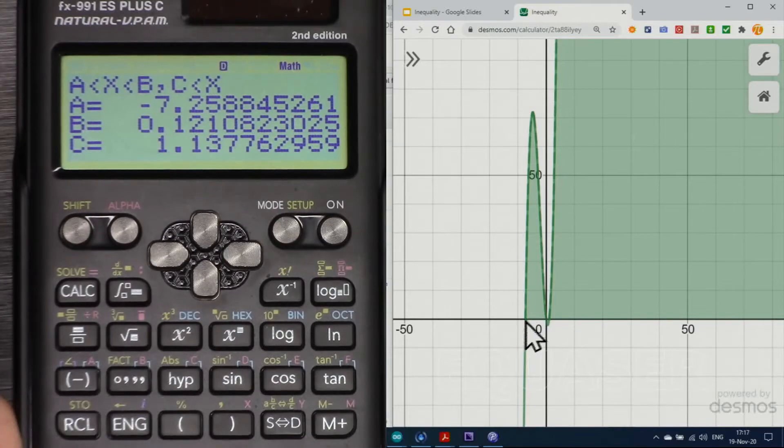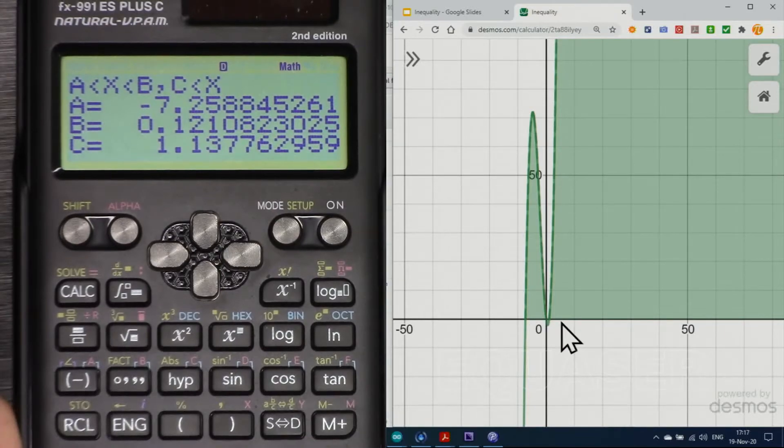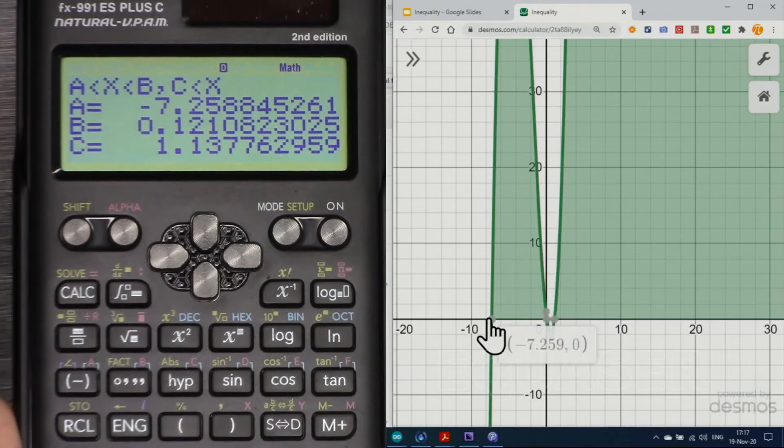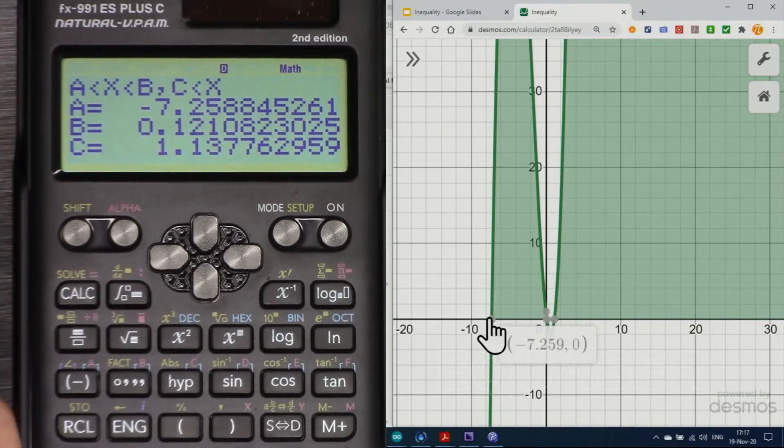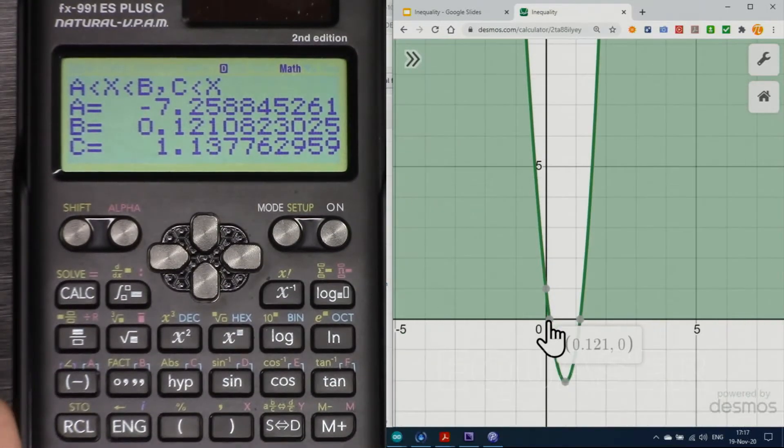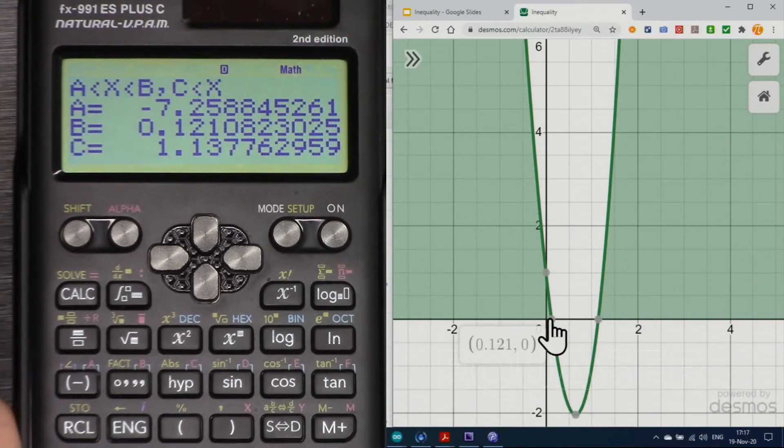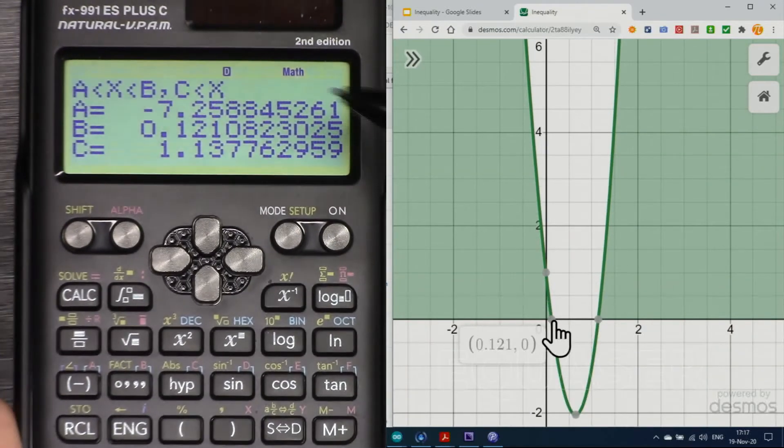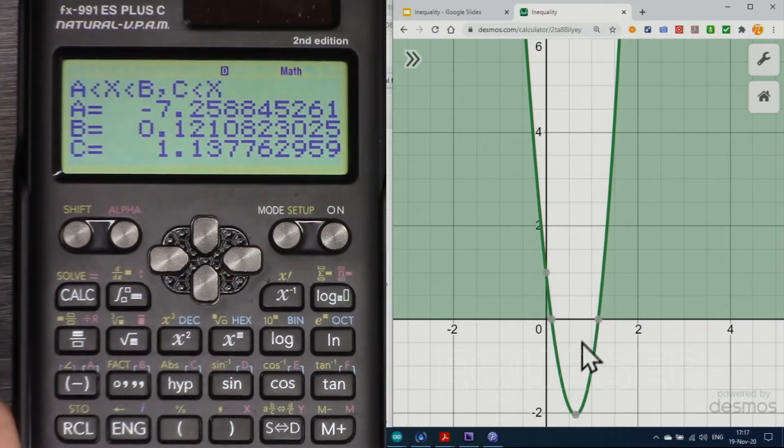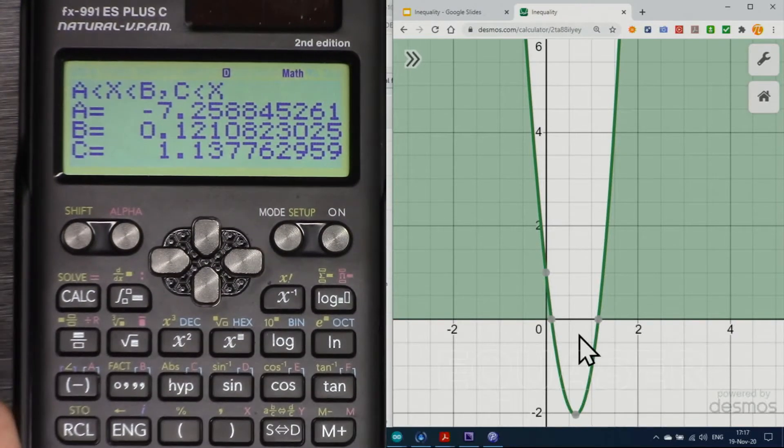So here greater than -7.1 and smaller than this value. If I click you will see here greater than -7.25, here as we can see, and this point is -0.1 to 1.